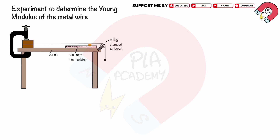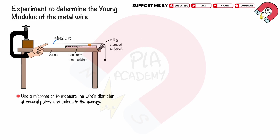Experiment to determine the Young's modulus of the metal wire. The apparatus was set up as shown in the diagram. A thin, long metal wire should be used. A longer and thinner wire extends more for a given force, which reduces the percentage uncertainty in measurements. First, determine the cross-sectional area of the wire. Use a micrometer to measure the wire's diameter at several points and calculate the average. Assuming a circular cross-section, use the formula A equals pi D squared over 4 to calculate the area.